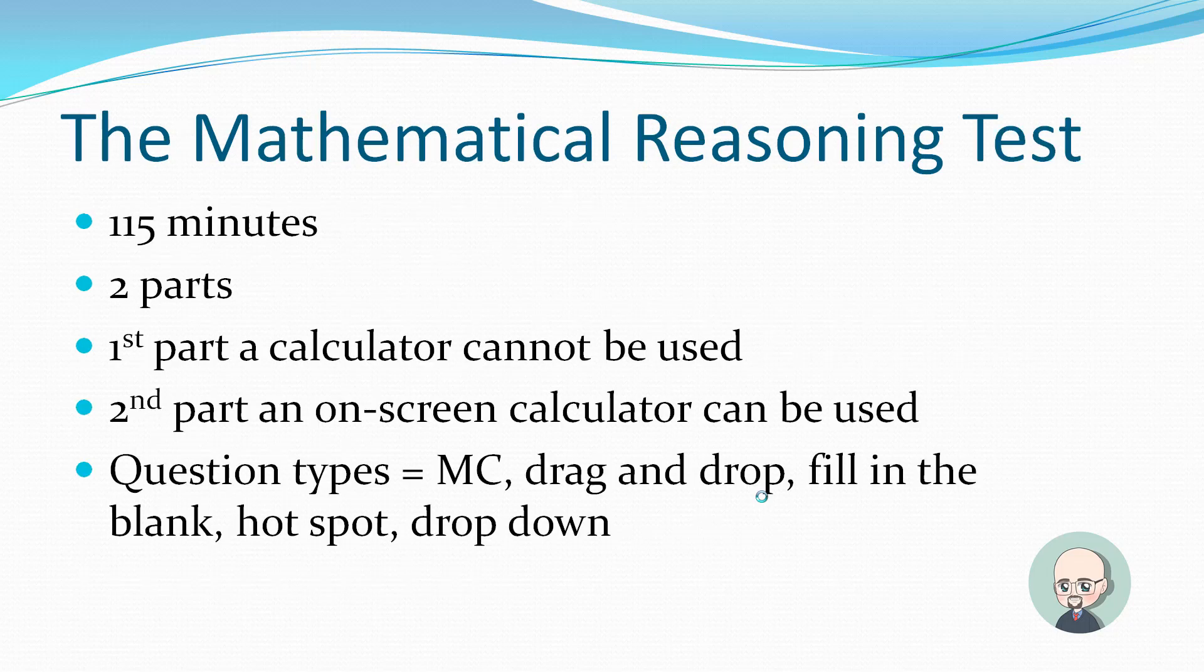Here's an overview of the actual test. It's called the Mathematical Reasoning Test. It's 115 minutes. That's about two hours. It's two parts. The first part, a calculator cannot be used. The second part, an on-screen calculator can be used. That means it's on the computer when you're taking the computer adaptive exam. On the computer, there's an on-screen calculator, kind of like if you have a laptop or desktop computer. When you go in the lower left-hand portion and type calculator, the calculator that comes up, it's kind of like that except a little simpler.